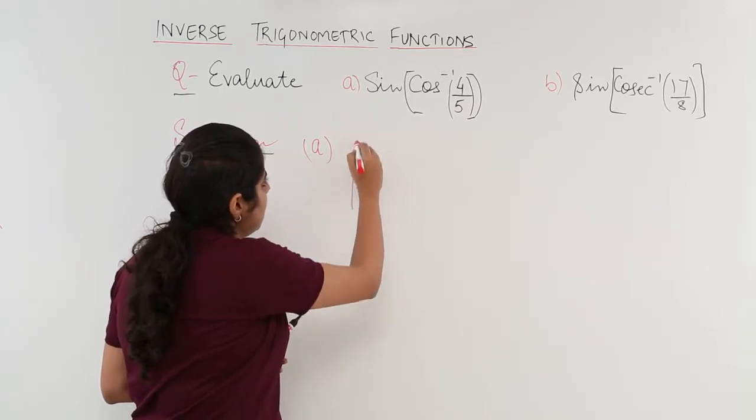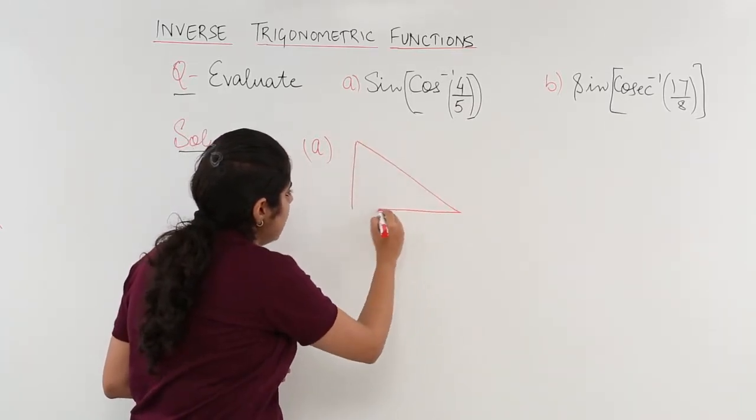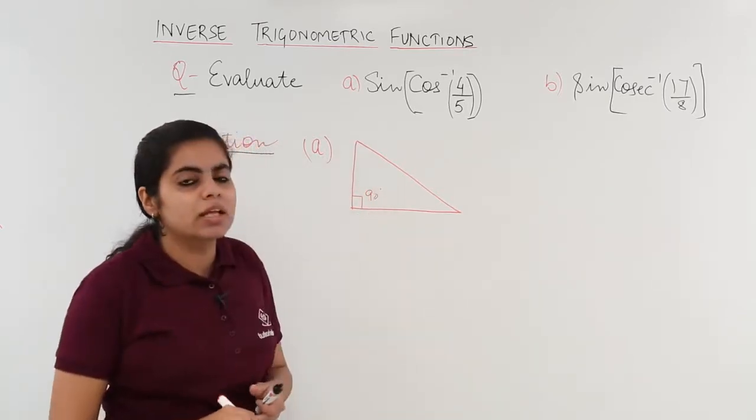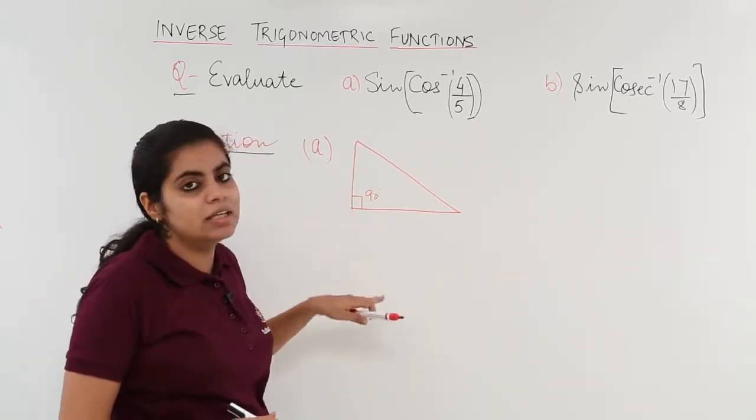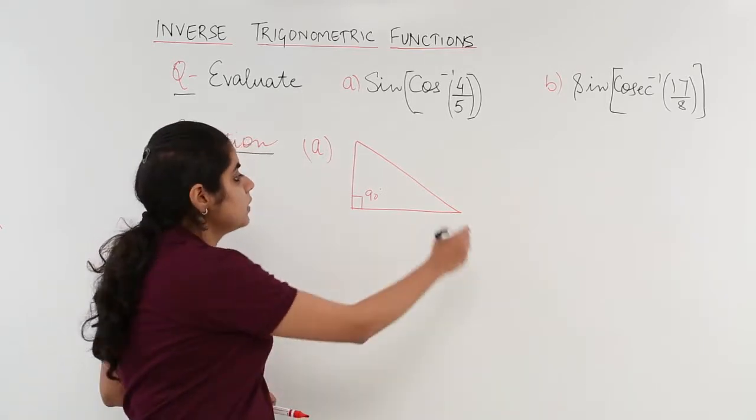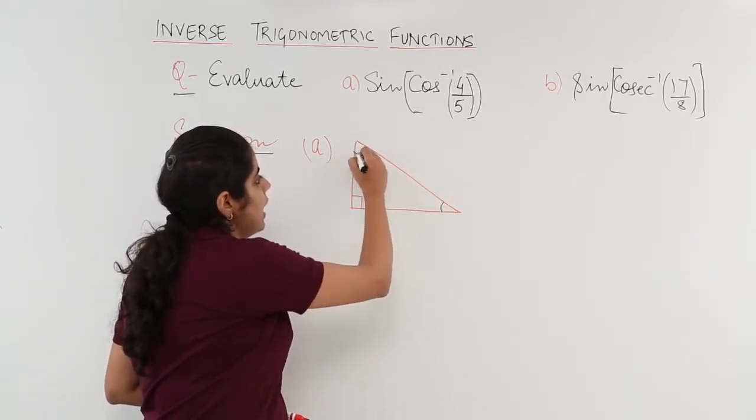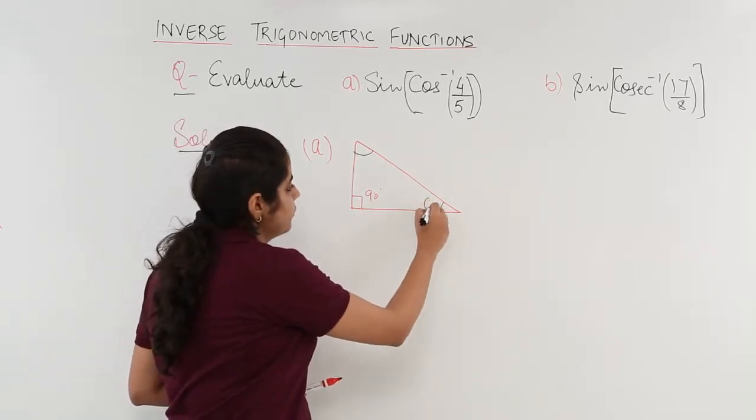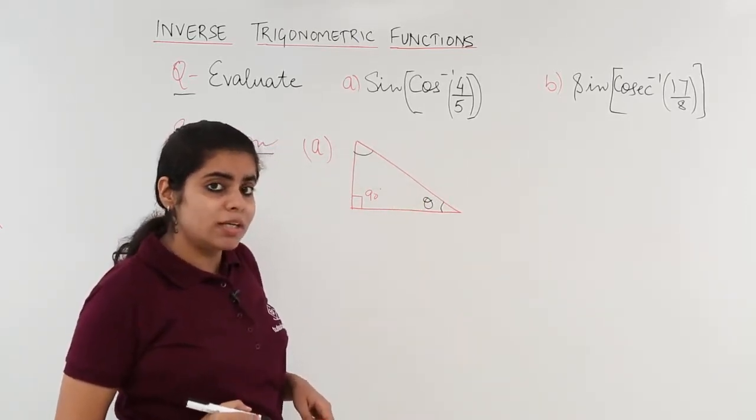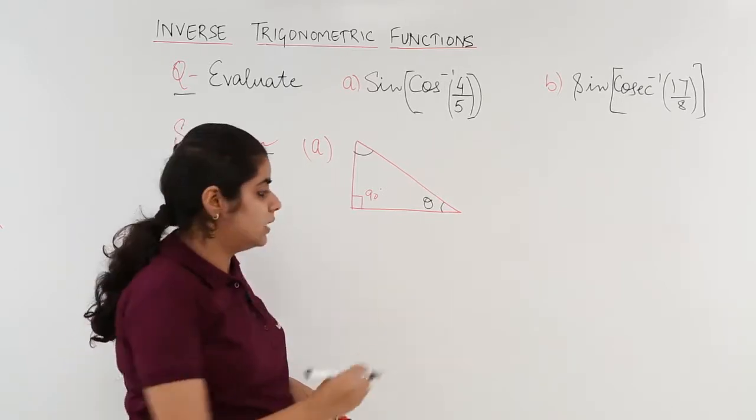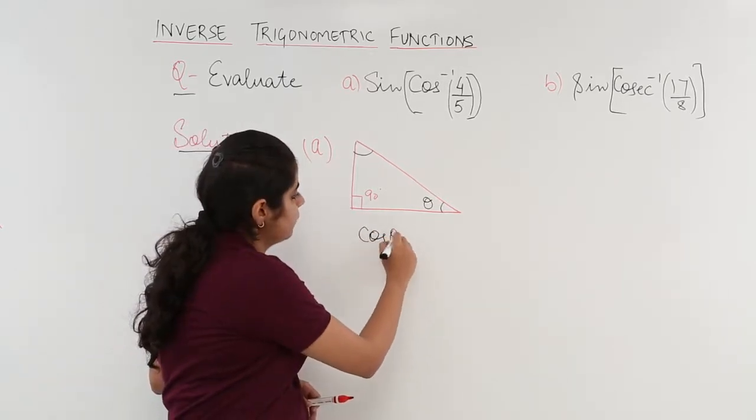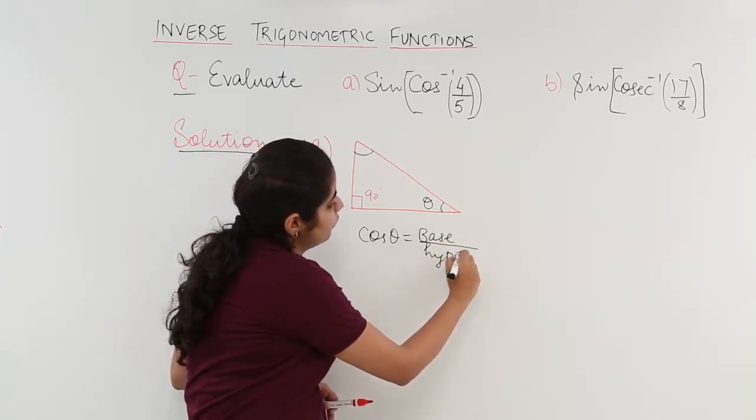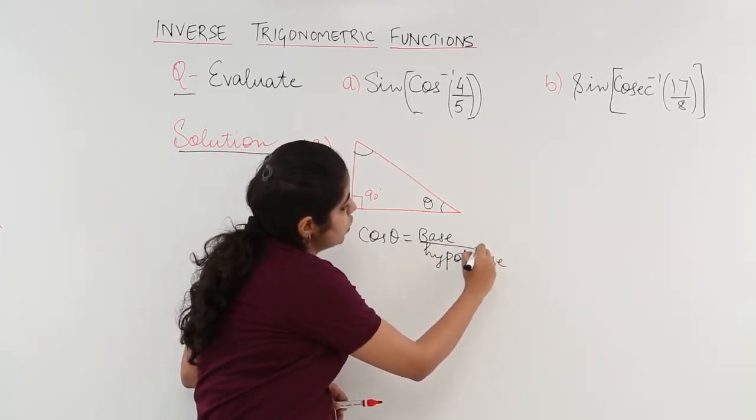Let's see a triangle to it. We have already studied about this triangle that in a right angle triangle, if it is 90 degrees at an angle and I have an angle called as theta here, suppose. So, what is cos theta? Cos theta is nothing but base upon hypotenuse.